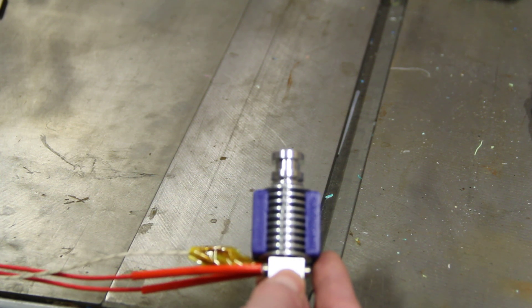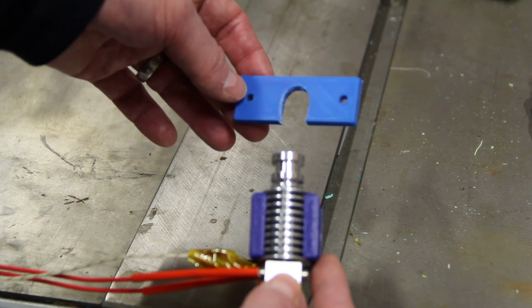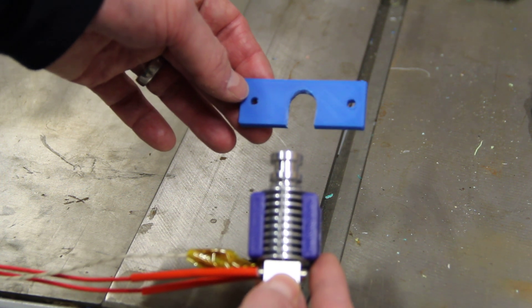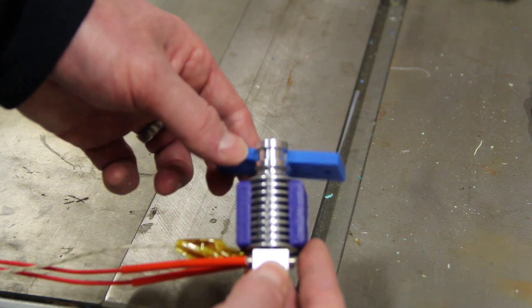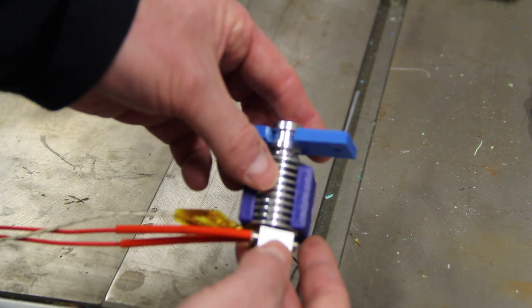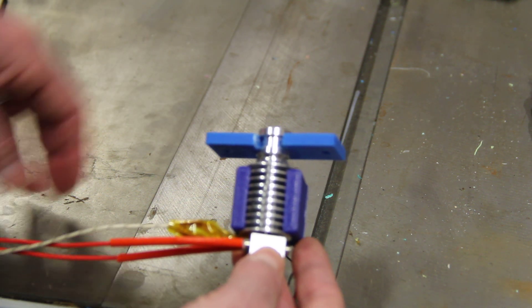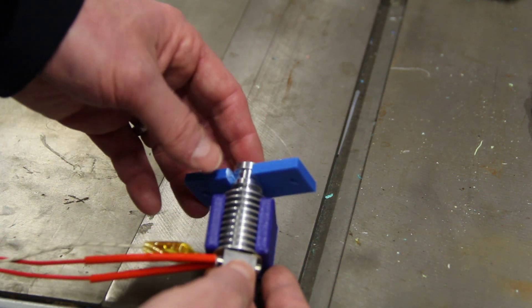But what do we do as RepRappers when we discover that there's some part that we need? Where do we go? We go to Thingiverse. And in this case, this mount right here was designed by BadgerForce. Thank you, BadgerForce, for creating the perfectly fitting, printable E3D version 5 hotend mount. So that problem was solved.